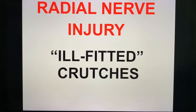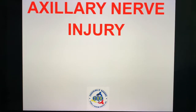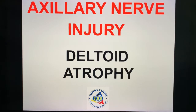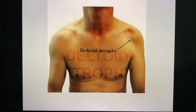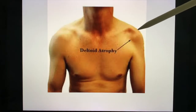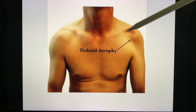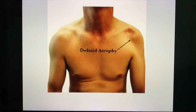Heads up: if a case of ill-fitted crutches comes out in the boards, it's not the axillary nerve that is injured — it is the radial nerve which is injured with ill-fitted crutches. Don't forget: injury to the axillary nerve leads to deltoid atrophy, as seen in this illustration.